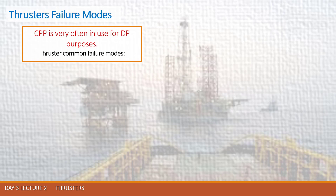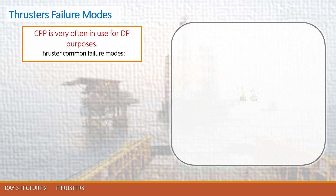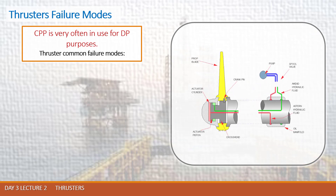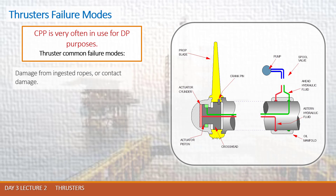One of the problems we have is damage of the system from ingested ropes or contact damage. Some problems appear during periods of use in case of seal failures, especially on CPP units.